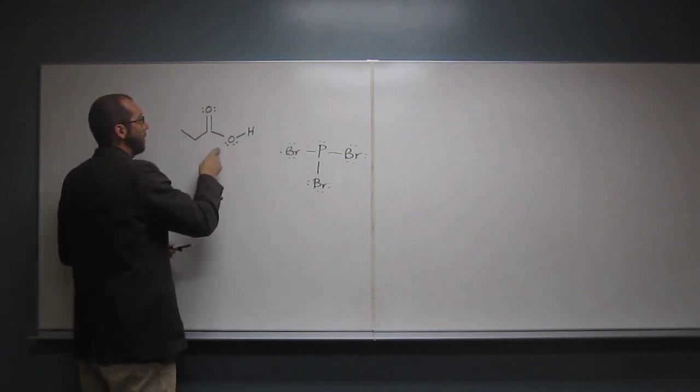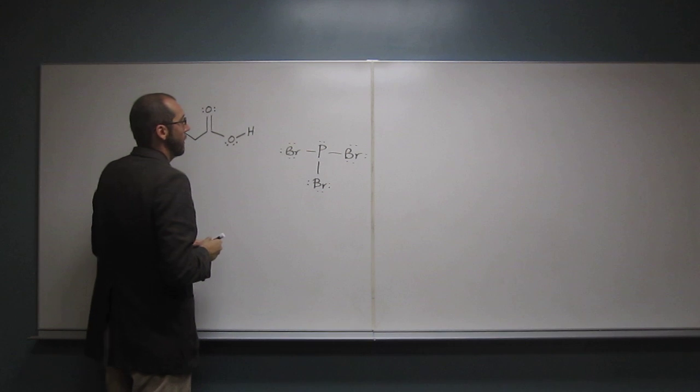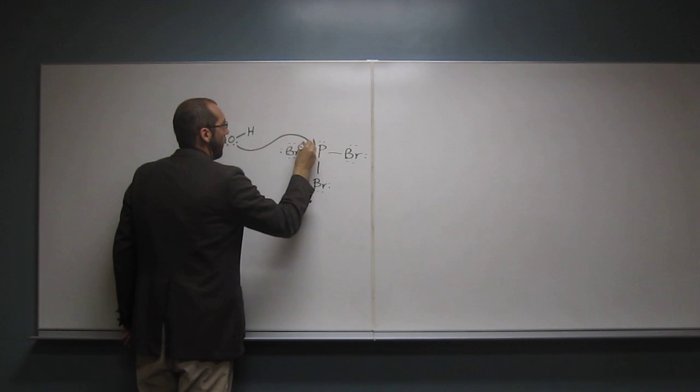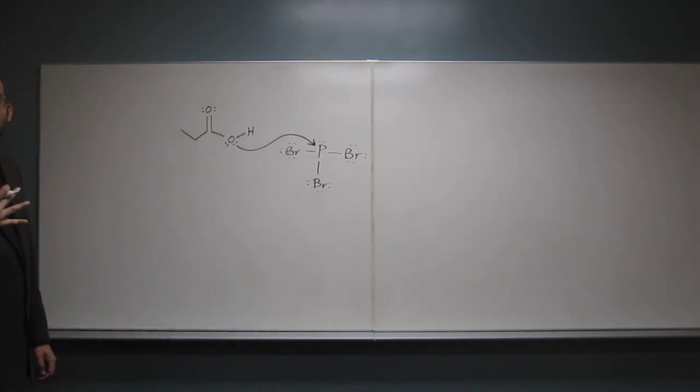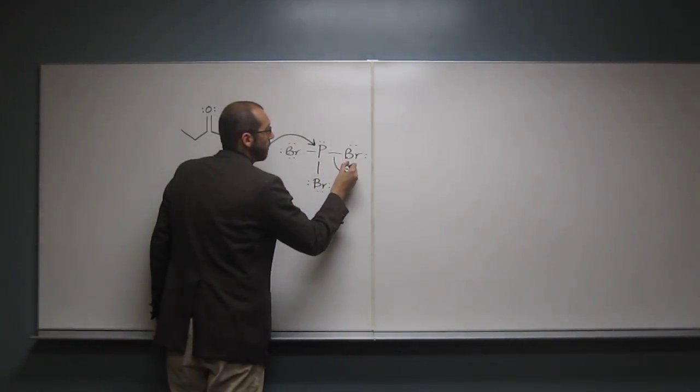It'll actually be the hydroxyl group portion of the carboxylic acid. We're going to take those electrons and attack that phosphorus atom. That's not the only thing that happens - we're also going to knock off one of these bromines.